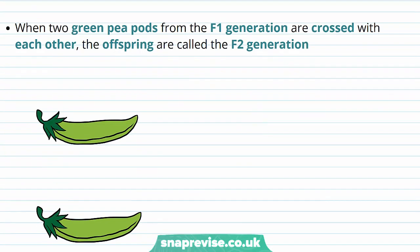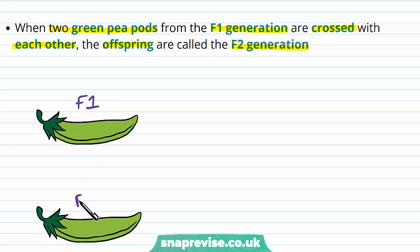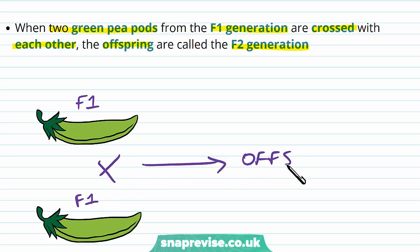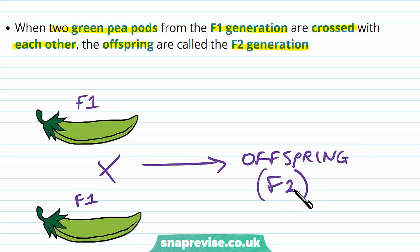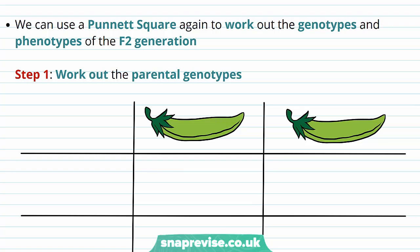What we can do now is breed the offspring in that generation together to make a second generation. When two green pea pods from the F1 generation are crossed with each other, the new offspring are called the F2 generation. We take members from the F1 generation, breed them together, and they will make new offspring — but this time it's our second generation, so it's the F2 generation.